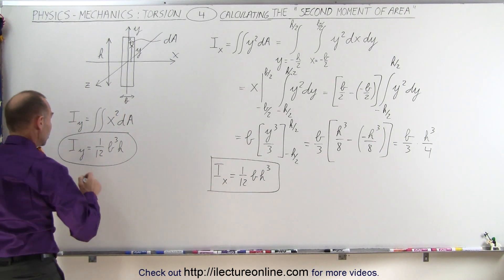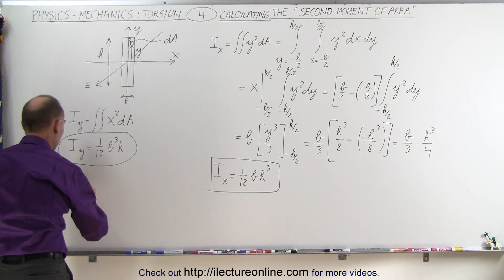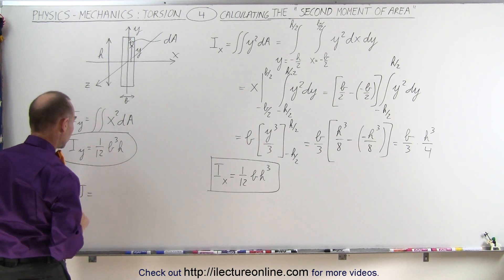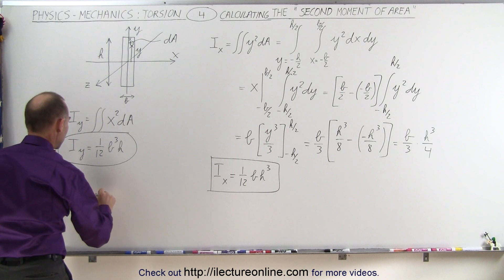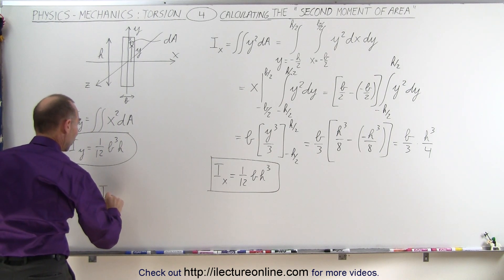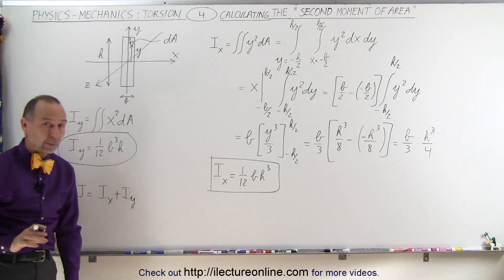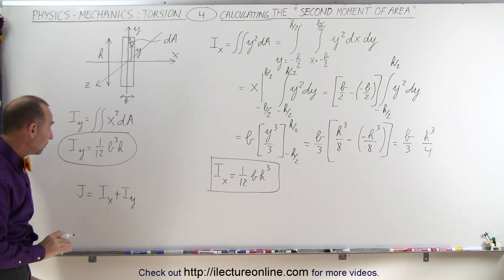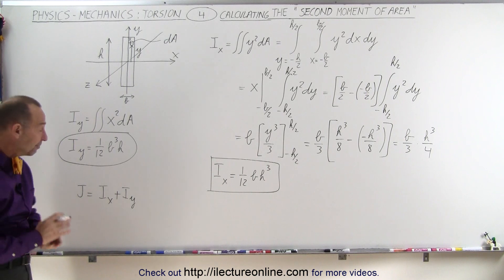Then finally, the total second moment of area, that we then would use as the torsional constant, is simply going to be equal to I_x plus I_y. We simply add them together. Now we'll show you later why we can do that, but here we'll just take it on faith for now.